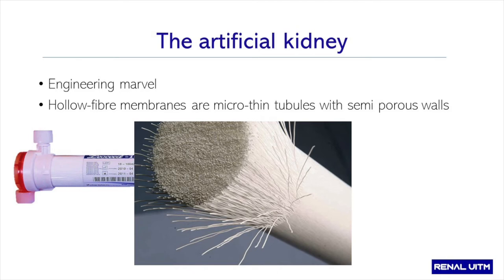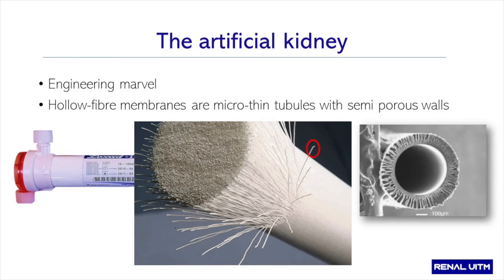If you open up the caps of the dialyzer, you will find a bunch of fine-looking strands which look like spaghetti or threads. There are approximately 20,000 fibers in that bundle. If you look at a single hollow fiber strand more closely using electron microscopy, you can see they actually look like straws with holes in the middle — and those holes are where the blood flows.